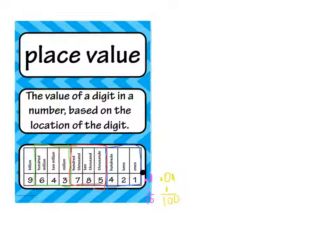Remember the trend in place value, that it's ones, tens, hundreds, thousands, ten thousand, hundred thousand, one million, ten million, hundred million, ones, tens, hundred.